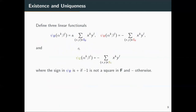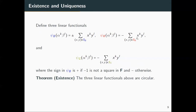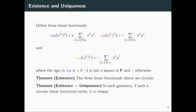I define three linear functionals ψ_B, ψ_R, ψ_G. For ψ_B there is a plus-or-minus sign: plus if −1 is not a square, negative otherwise. One can observe that these three linear functionals are circular. A perhaps slightly surprising fact is the uniqueness theorem: in every geometry, if such a circular linear functional exists, it must be unique. So the only circular linear functional in each geometry is ψ_B, ψ_R, or ψ_G respectively.